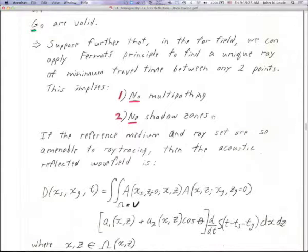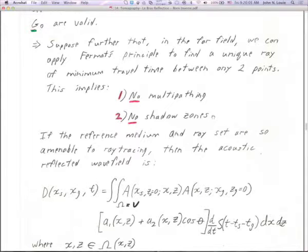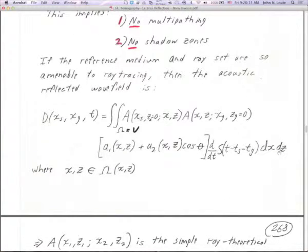What are we giving up? We're giving up shadow zones — you've seen how much trouble deterministic travel-time calculators have with shadow zones and diffraction zones. We're giving up multi-pathing. Multi-pathing and shadow zones are related but not always the same. With deterministic travel times we can see multi-pathing in calculated ray paths, so we don't necessarily have to give it up entirely. But for this assumption, we do. This assumes the reference media and ray set are amenable to ray tracing.